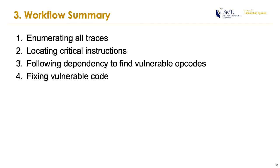Let me summarize our 4 steps to fixing smart contracts. First, we enumerate all possible traces. Second, we locate critical instructions. Third, we follow dependencies to find vulnerable opcodes. Last, we generate fixes for them.